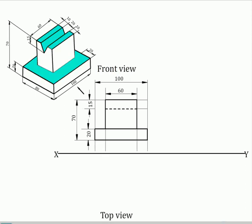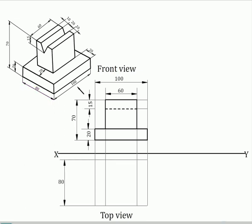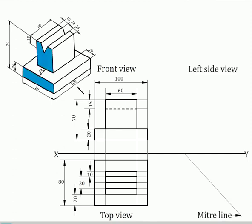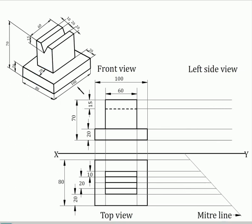After completing the front view, drop projectors from important corners vertically downward. Now complete the top view. To draw the left side view, draw the miter line and draw projectors horizontally from the front view and through the miter line from the top view.